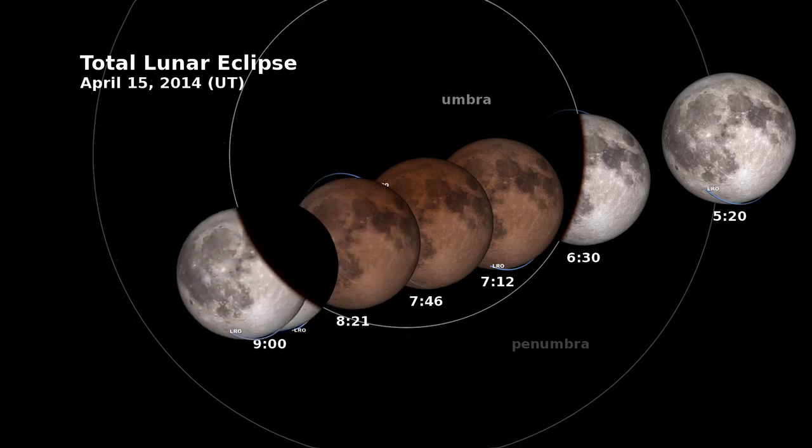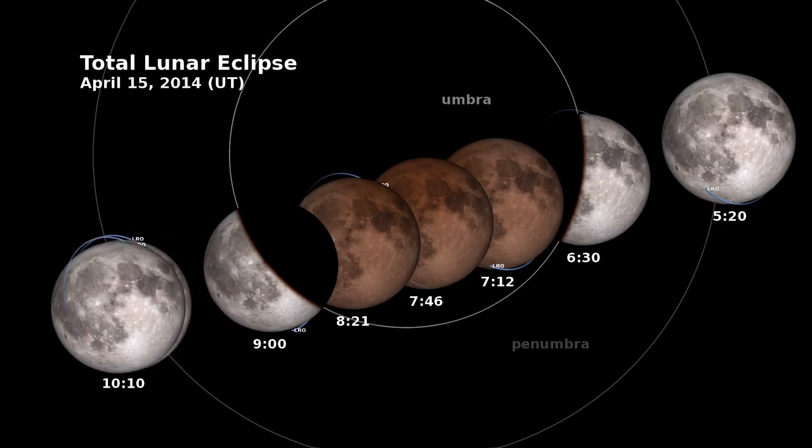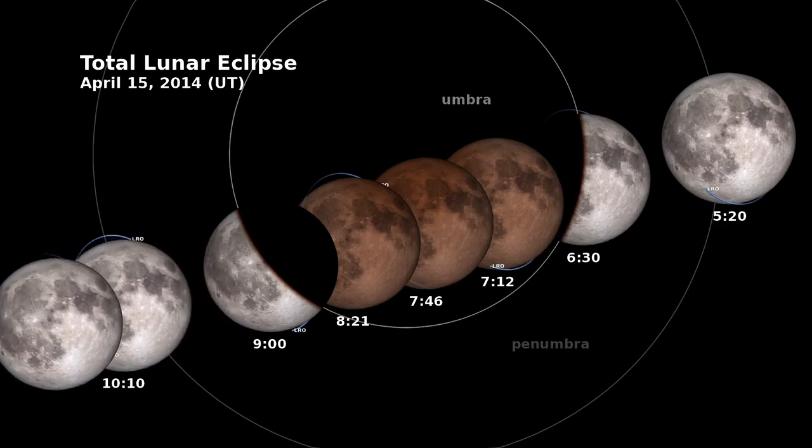When the moon comes out of the Earth's umbra, it begins to look as we've always seen it, this beautiful bright gray orb in the sky.